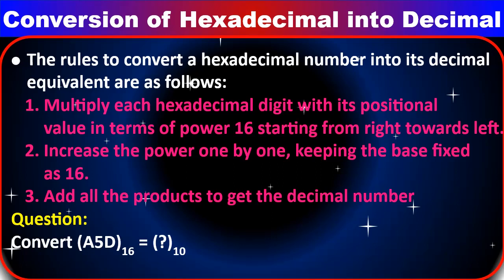Conversion of hexadecimal into decimal: the rules are very similar to binary-to-decimal and octal-to-decimal. Multiply each hexadecimal digit with its positional value in terms of powers of 16, starting from right towards left. Increase the power by 1 each time, keeping the base fixed as 16. Then add all the products to get the decimal number. Question: convert (A5D)₁₆ to base 10.